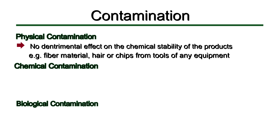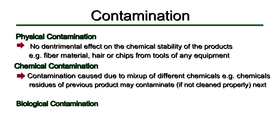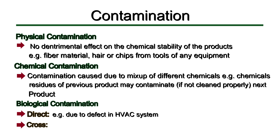Such contamination is termed as physical contamination. Whereas in chemical contamination, the contamination is caused due to mix-up of different chemicals. For example, chemical residues of a previous product kept in a container, if not cleaned properly, may contaminate the next product. Biological contamination can be classified into two types. The first is direct contamination, which can occur due to the simple spread of microorganisms — for example, contamination due to defects in heating, ventilation, and air conditioning systems. Whereas in cross-contamination, there is an indirect spread of microorganisms — for example, improper sterilization of equipment.